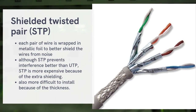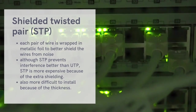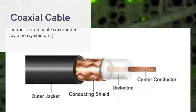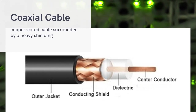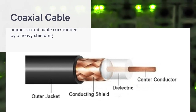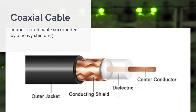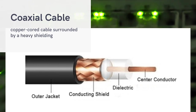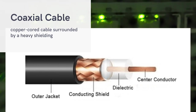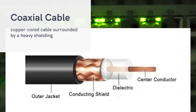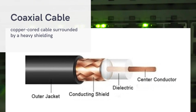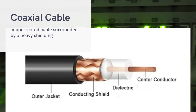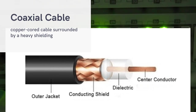Another type of cable is the coaxial cable. It is a copper cord cable surrounded by heavy shielding, which greatly reduces interference. Coaxial cable is usually used outdoors, but today fewer people use it because being an outdoor cable, it has a length limitation.